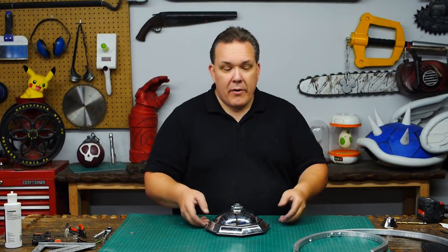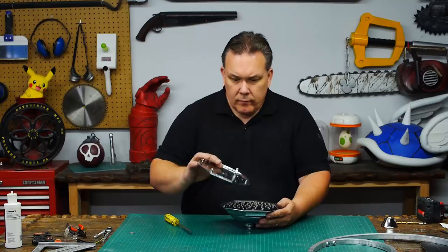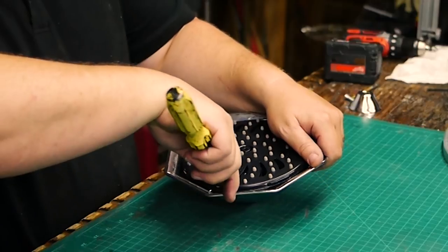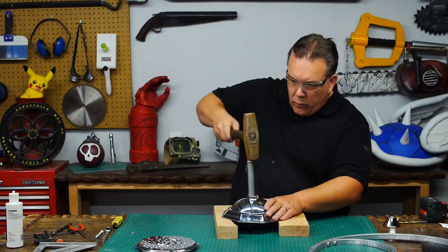First, I have to disassemble the shower head. Getting the plastic face of the shower head off was easy, but the guts of the shower head were not interested in coming out. So I did the sensible thing and hit it with a hammer.